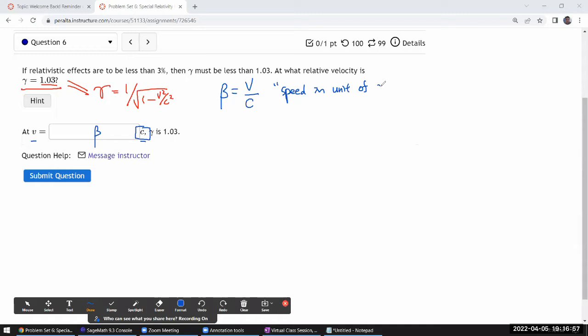So you could think of this as a speed in unit of c. And in lecture, I talked about how it's really common for people who work in special relativity to use the unit system where c is equal to 1. I'm not going to use that because that tends to confuse people.